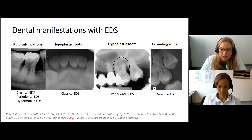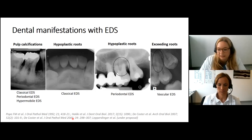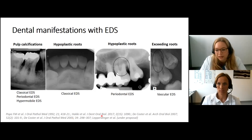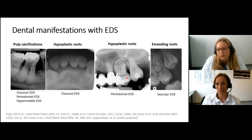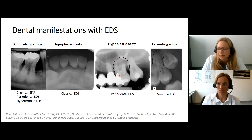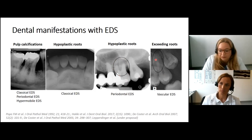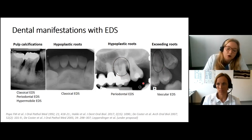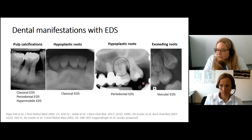Shortened roots have been described so far in nine individuals, so the true prevalence of this finding is still unclear. Hypoplastic roots were described in periodontal EDS as well. In periodontal EDS it is normal that a tooth has three roots, while in vascular EDS some cases have been described with root fusions and exceeding root lengths. These are all biologic variations and not really pathologies, but interesting to see.